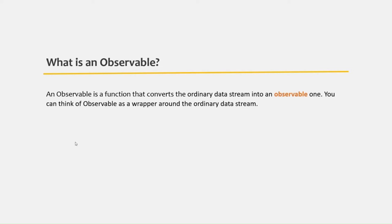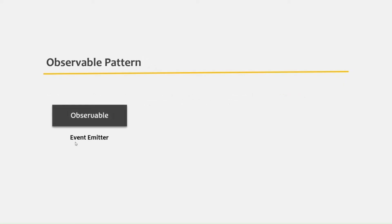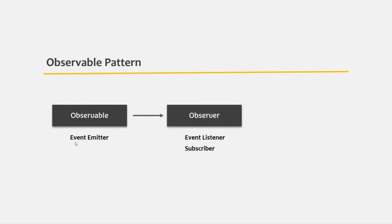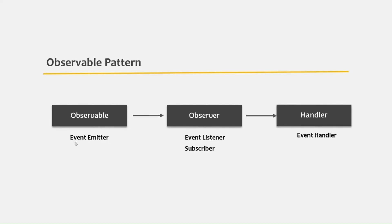The observable is provided by the RxJS library, and RxJS uses the observer pattern. In an observer pattern, we have an event emitter — also called an observable — which emits some events. And we also have an observer, which listens for those events. Whenever an observable emits an event, the observer waits for that event to happen. Once the event happens, the observer can handle it using event handlers. So the observer, or subscriber, listens for events and can execute some logic with the help of event handlers.